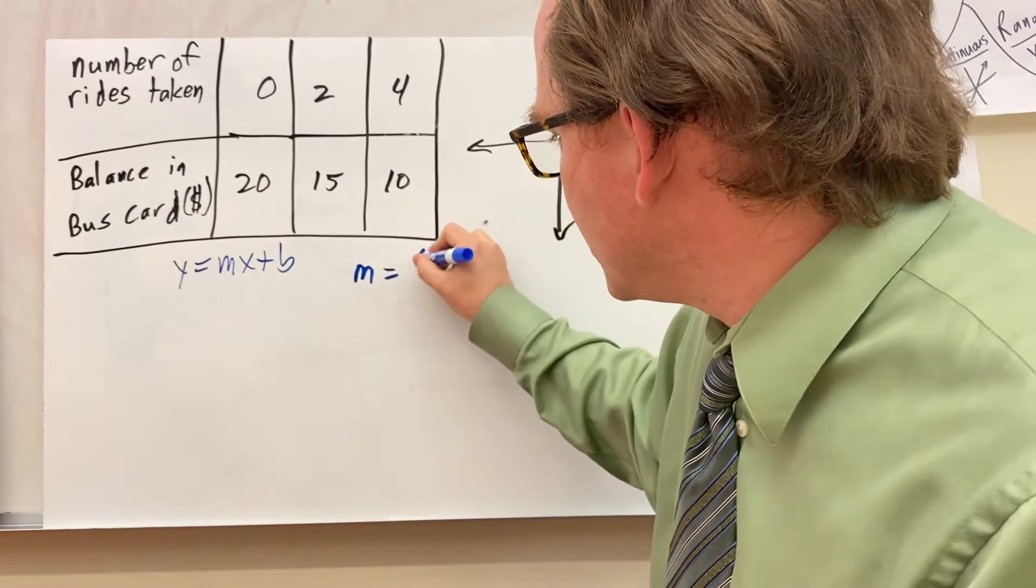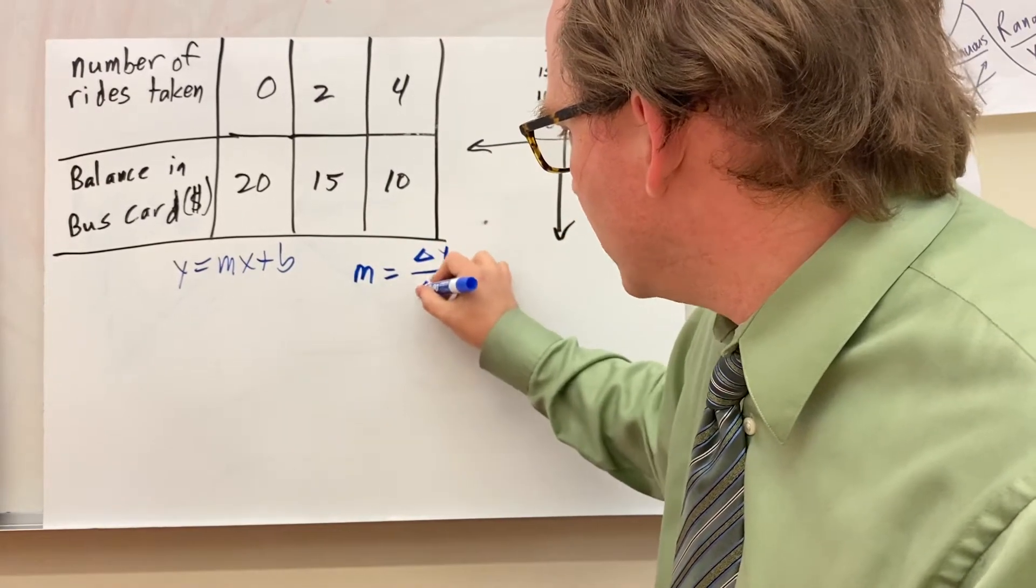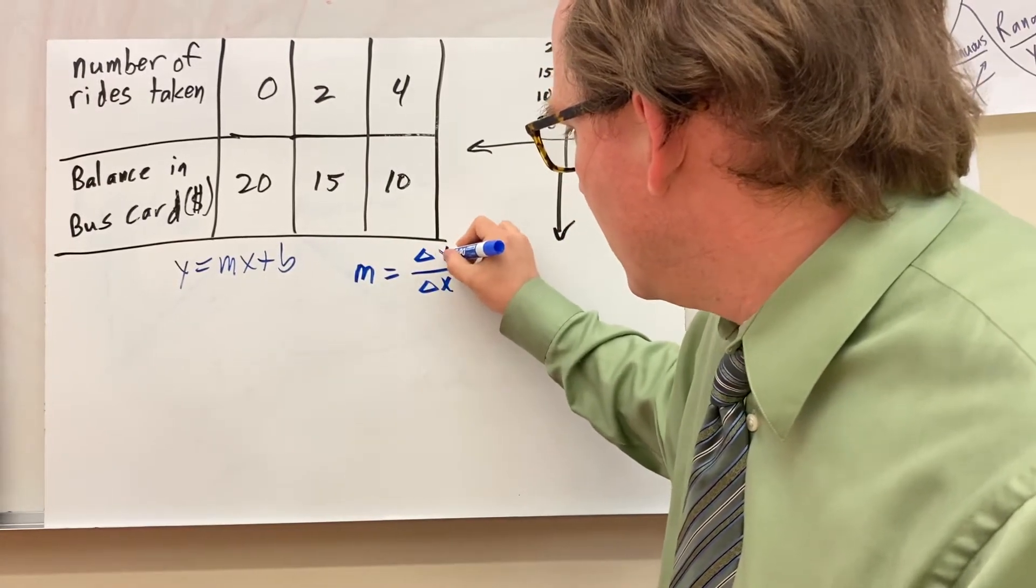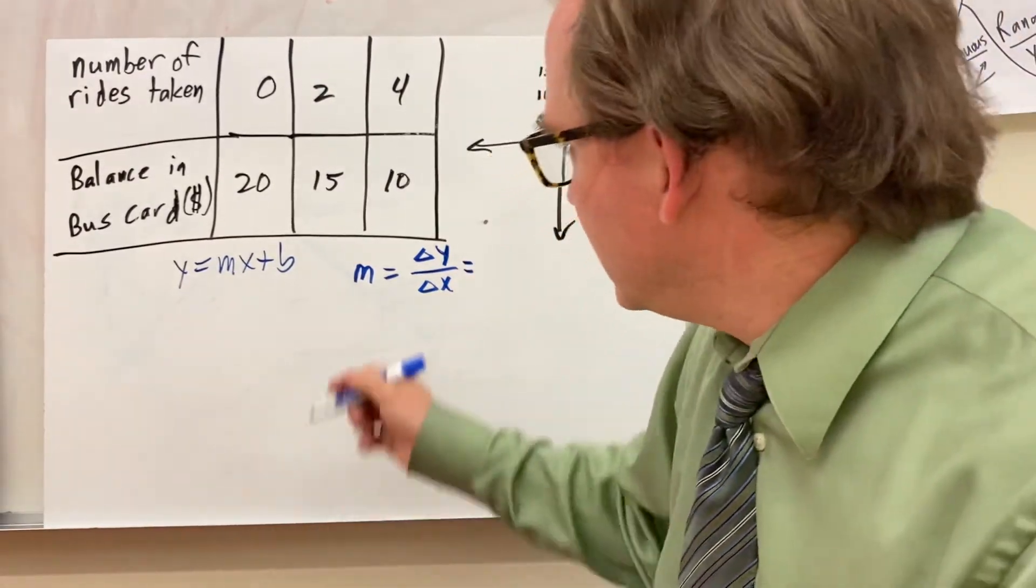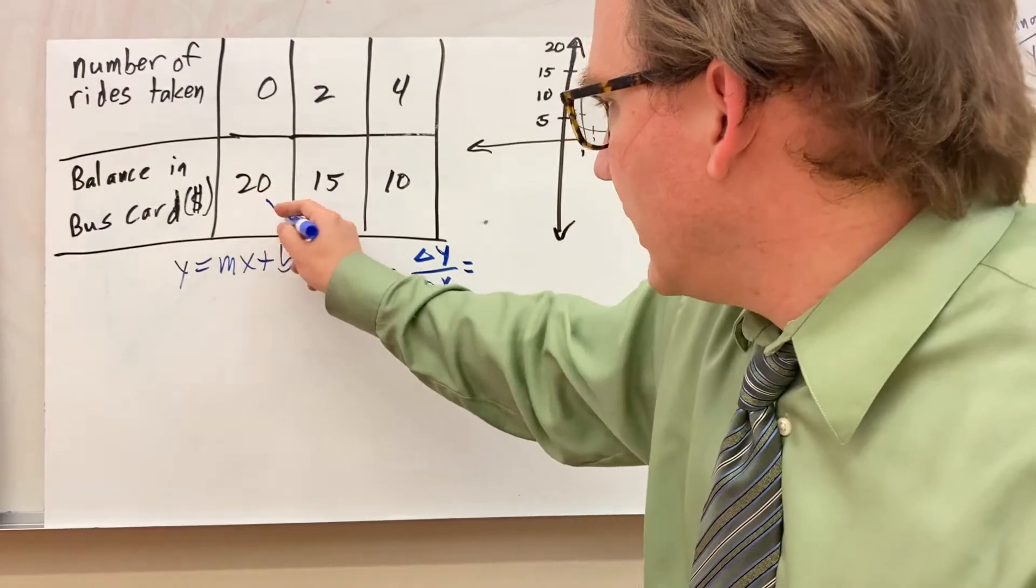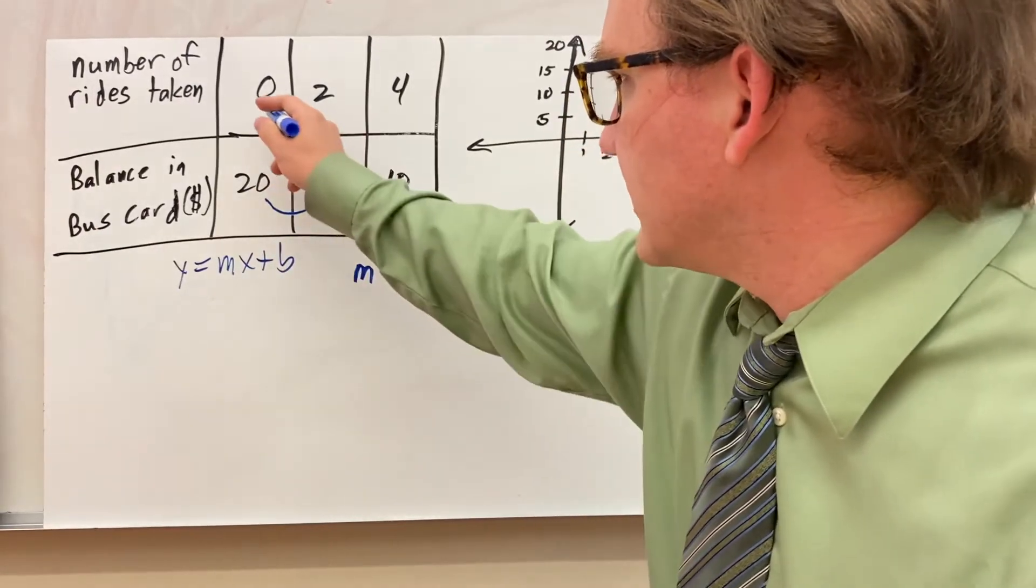m is equal to our change in our y-coordinate over our change in our x-coordinate whenever we're dealing with a non-proportional relationship. That means that I have to look here. How does my y-coordinate change as my x-coordinate changes?